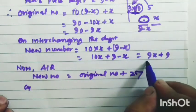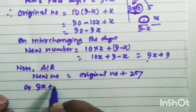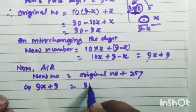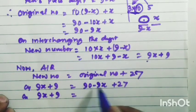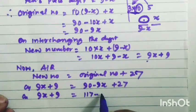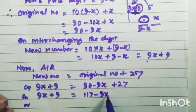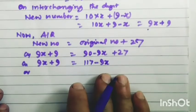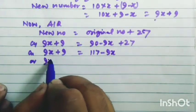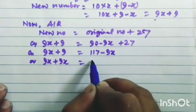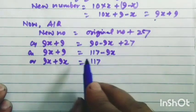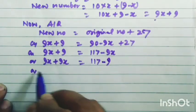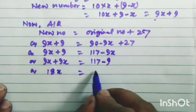So the new number is 9x plus 9, equal to 90 minus 9x plus 27. Transposing 9x from the right-hand side to the left-hand side: 9x plus 9x equals 117. And transferring the constant 9 from the left-hand side to the right-hand side: 18x equals 117 minus 9, which equals 108.